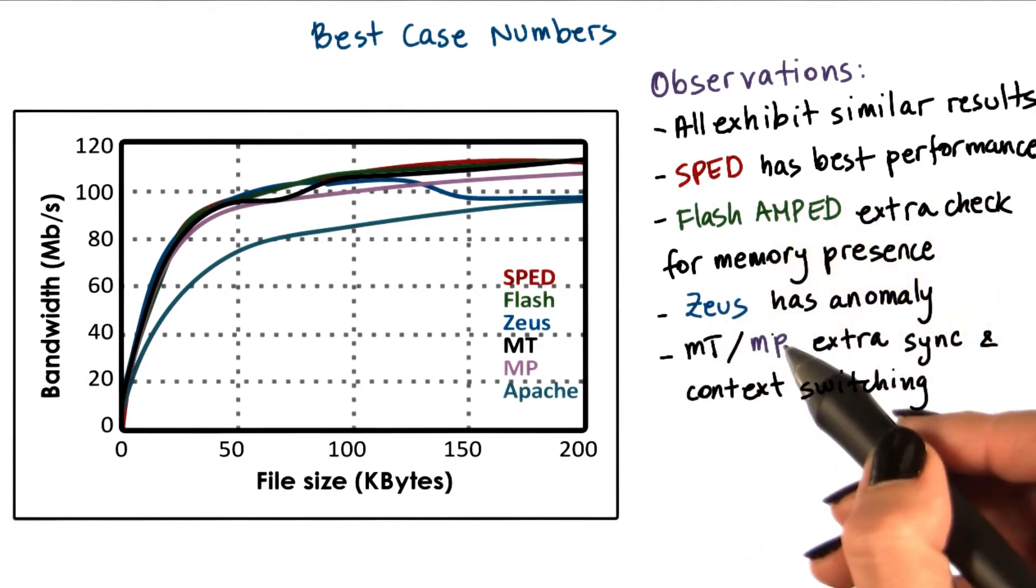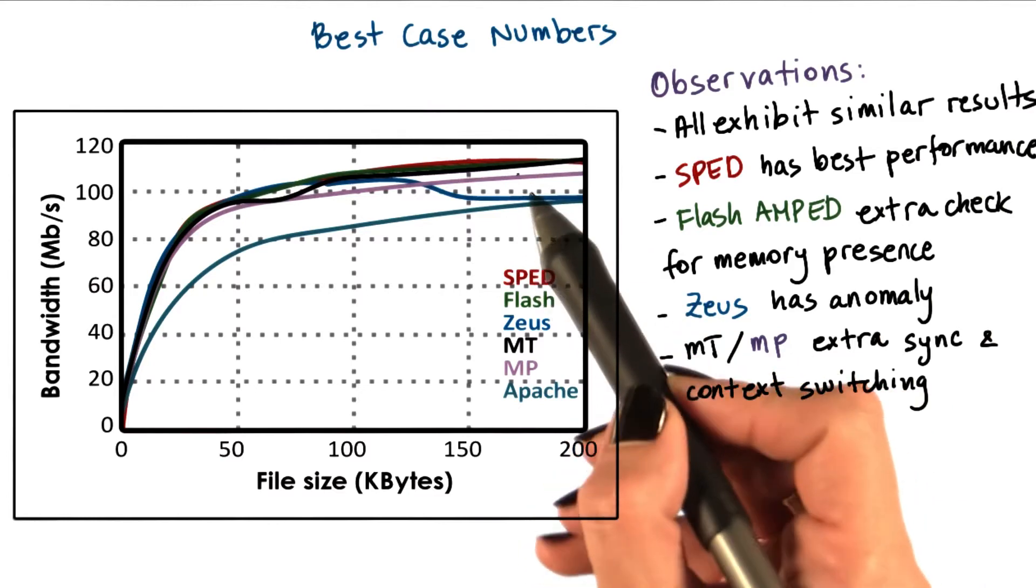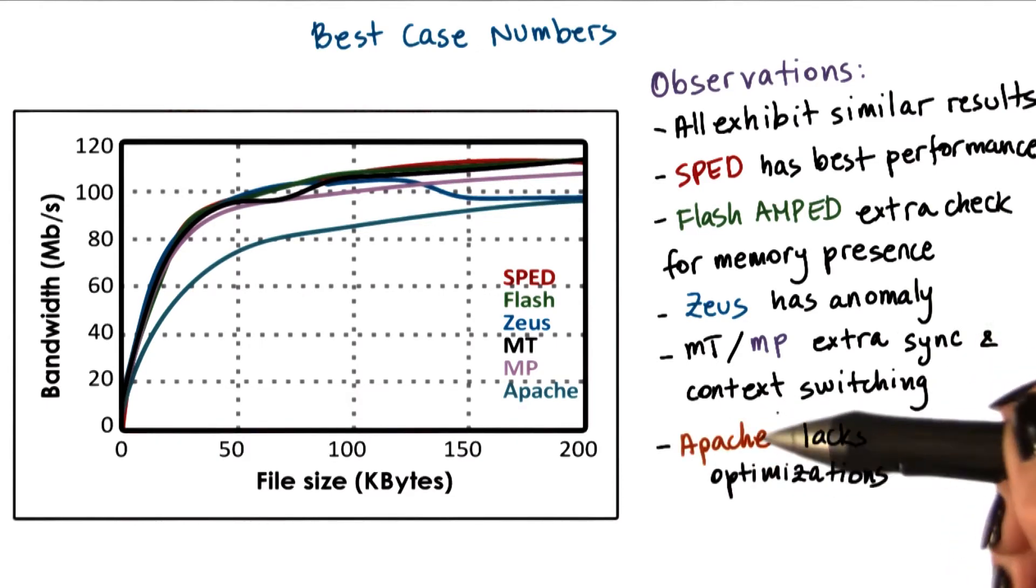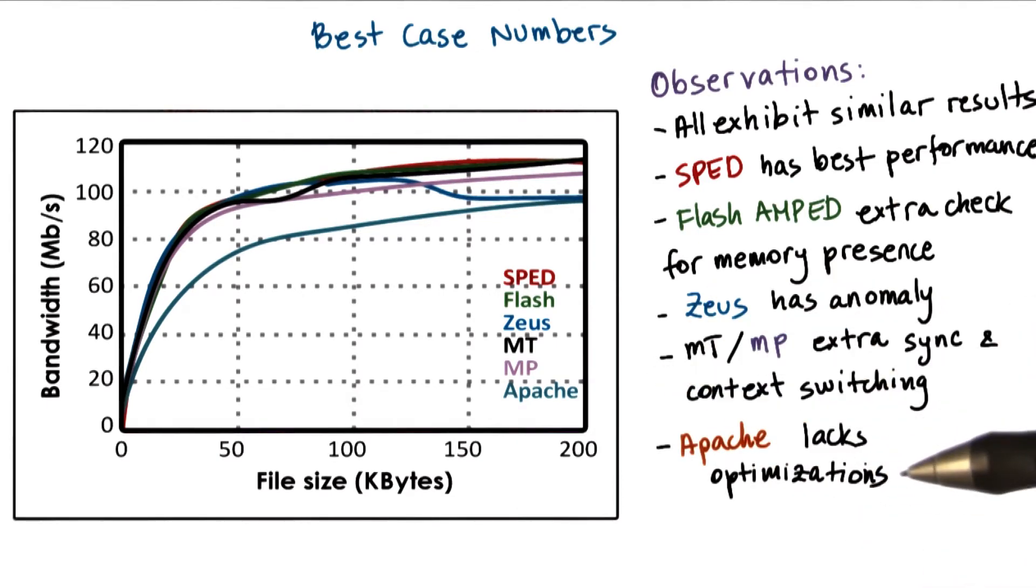For the multithreaded and the multiprocess models, the performance is slower because of the context switching and extra synchronization. And the performance of Apache is the worst because it doesn't have any optimizations that the others implement.